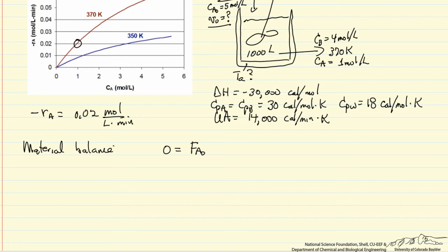There's molar flow rate, this is moles per time, moles per minute flowing in, molar flow rate out, and then the rate of reaction of A times the volume of the reactor.